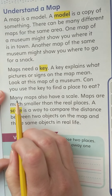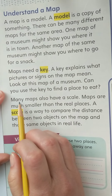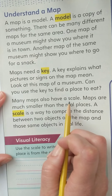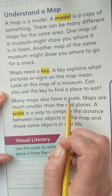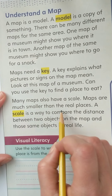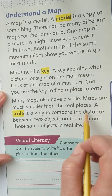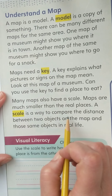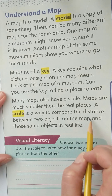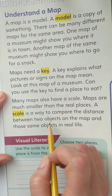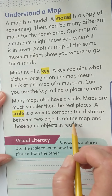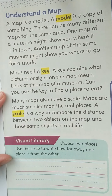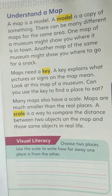We're now on our third paragraph. Many maps also have a scale. Maps are much smaller than the real places. A scale is a way to compare the distance between two objects on the map and those same objects in real life.